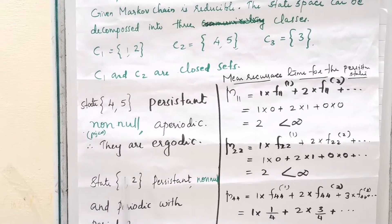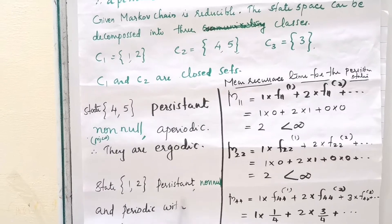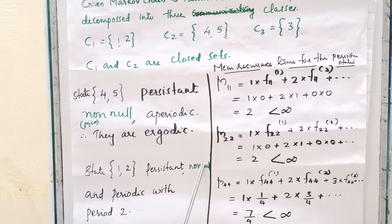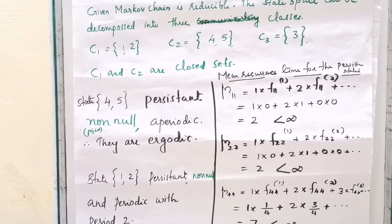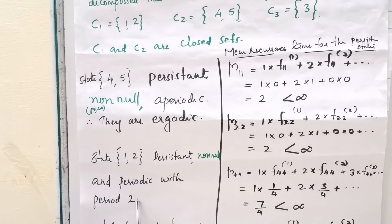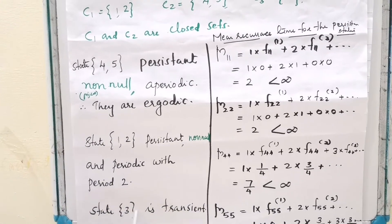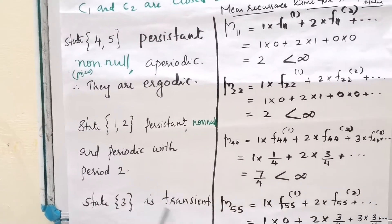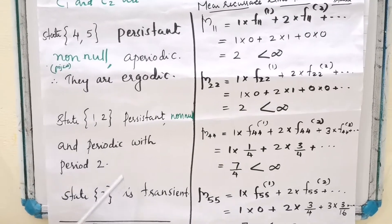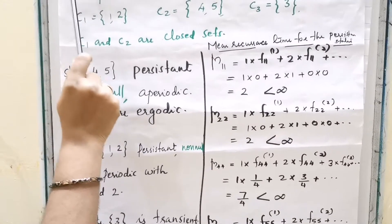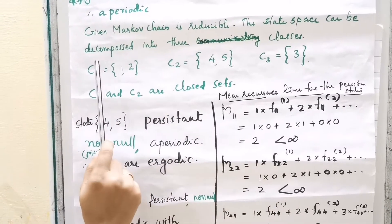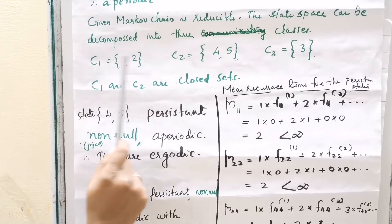Consider states 1 and 2. They are persistent and non-null, but they are periodic with period 2. State 3 is transient. The given Markov chain is reducible and the state space can be decomposed into three classes: C1, C2, and C3. C1 and C2 are closed sets.